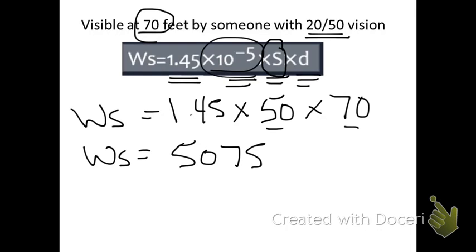For 10 to the negative 5, you simply move the decimal point five places to the left. 1, 2, 3, 4, 5.